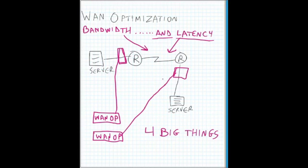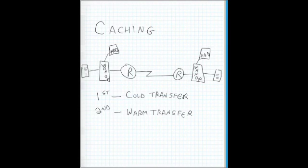But really, four big things that WAN optimization does from a technical perspective - there's a bunch of others and there may be some disagreement, but I'm just going to go with four basic things. As far as I'm concerned, the really big one here is caching.